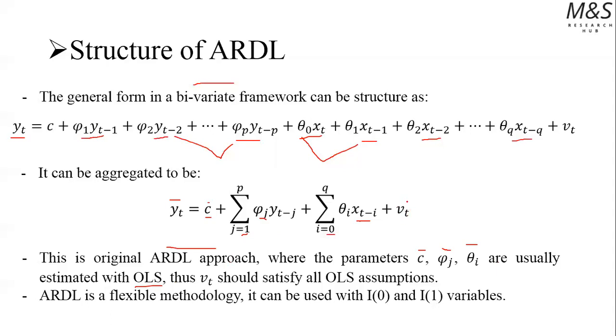So when we are estimating this model, the autoregressive model with the OLS, then v should satisfy all of the ordinary least squares assumptions. That includes no autocorrelation, that includes no heteroskedasticity, that includes functional form, and so on.